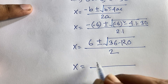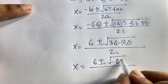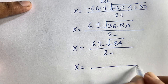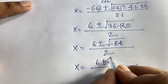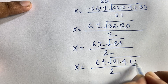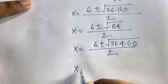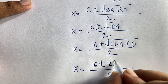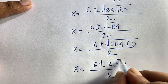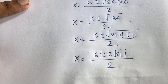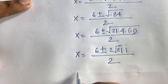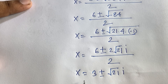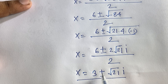This gives x equals (6 plus or minus square root of minus 84) over 2. Rewriting: square root of minus 84 equals square root of 4 times 21 times minus 1, which is 2i times square root of 21. Dividing through by 2: x equals 3 plus or minus square root of 21 times i. These are complex number values: x equals 3 plus square root(21)·i and x equals 3 minus square root(21)·i.